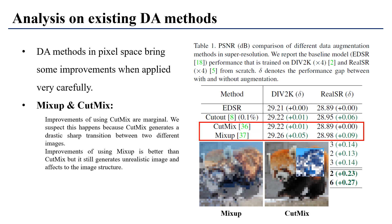Here, CutMix, which has sharp boundaries, shows worse results than MixUp, which is very interesting — because CutMix shows much higher improvement in high-level vision tasks such as classification. We hypothesize that methods which give sharp transitions or unrealistic pixel distributions degrade the image restoration performance.